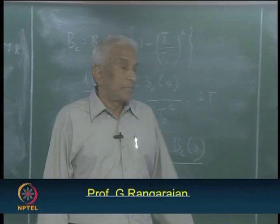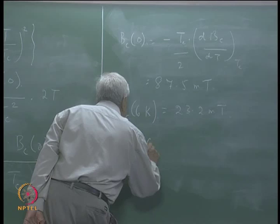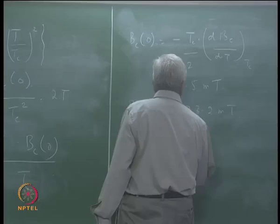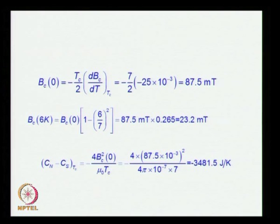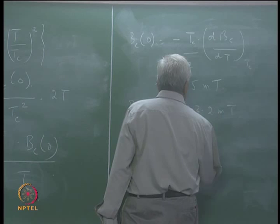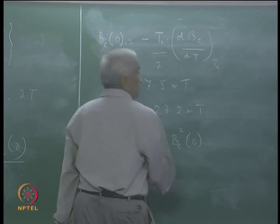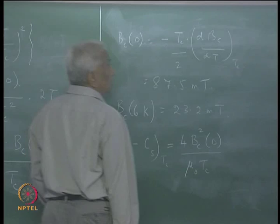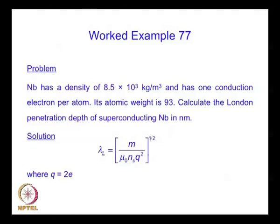The jump in the specific heat at T_C between the normal and superconducting states was derived in the lecture. Substituting all these values gives a result of 3481.5 joules per Kelvin.